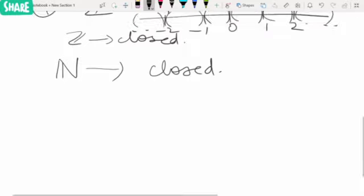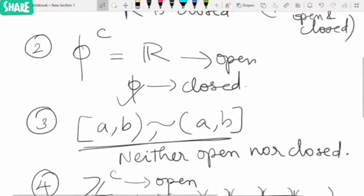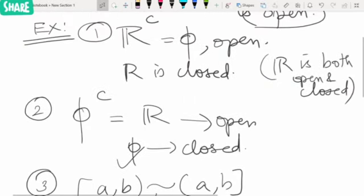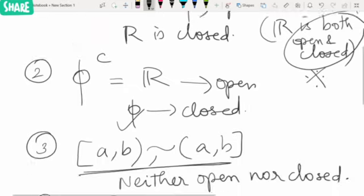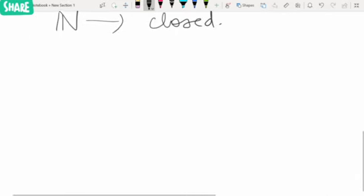We have already mentioned that R and the empty set are open and closed sets, but these are the only sets which are both open and closed. This is an important thing to notice. Let us